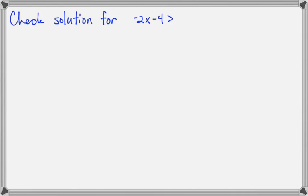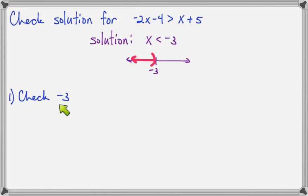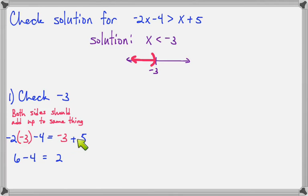So we've already worked this problem, and we already got the solution of x is less than negative 3. But now let's check it. So if I want to see if negative 3 is correct, what I'll do is I'll plug negative 3 into both sides and add it up. Negative 2 times negative 3 will be positive 6, and negative 3 plus 5 will be 2. So 6 minus 4 is 2. That's true. So I know that negative 3 is the correct number.